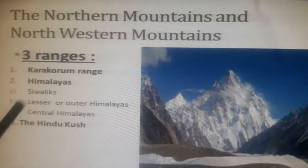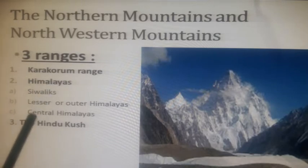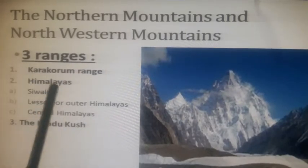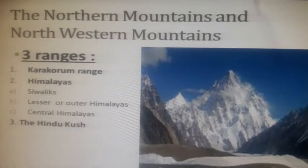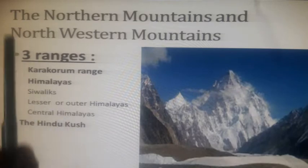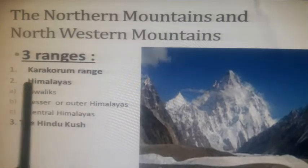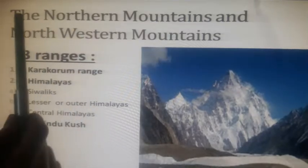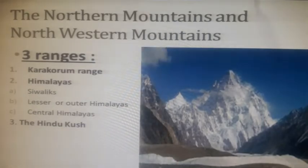The northern mountains and the northwestern mountains are divided into three ranges: the Karakoram range, the Himalayas (which is further divided into Siwaliks, lesser or outer Himalayas, and central Himalayas), and the Hindu Kush. The Hindu Kush are the northwestern mountains, whereas the Himalayas and the Karakoram range are the northern mountains of Pakistan.